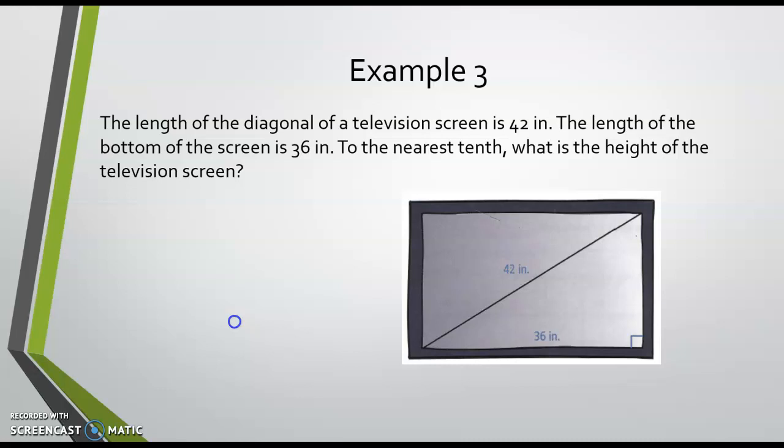The length of the bottom of the screen is 36 inches. To the nearest tenth, what is the height of the television? So again, here's our right angle, so that makes the 42 my c, and I'm looking for b, and we're going to call 36 a.